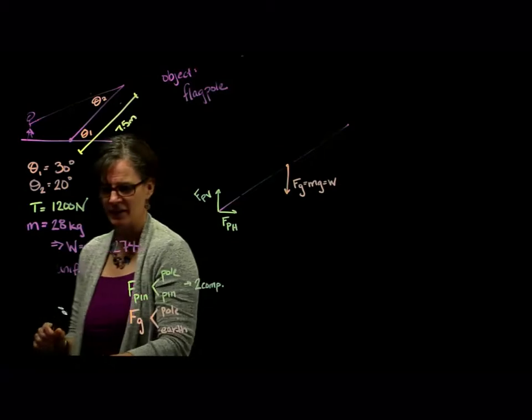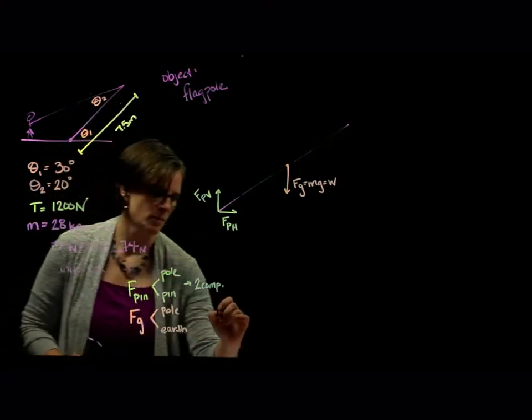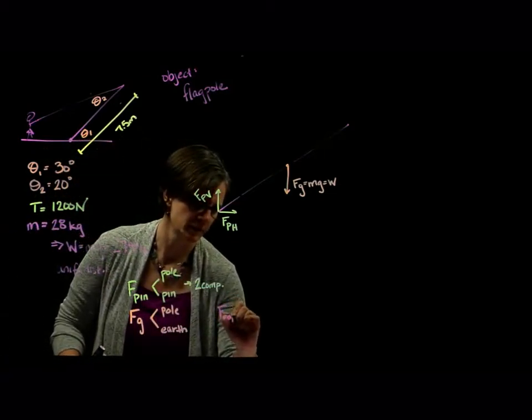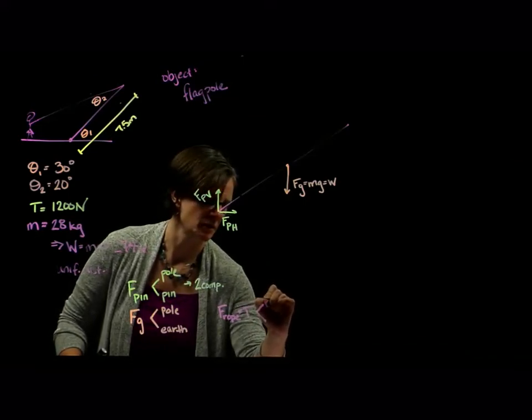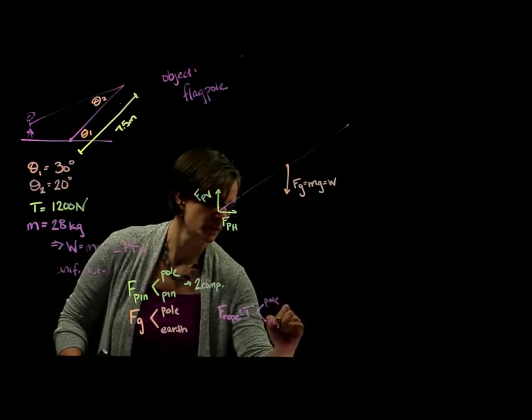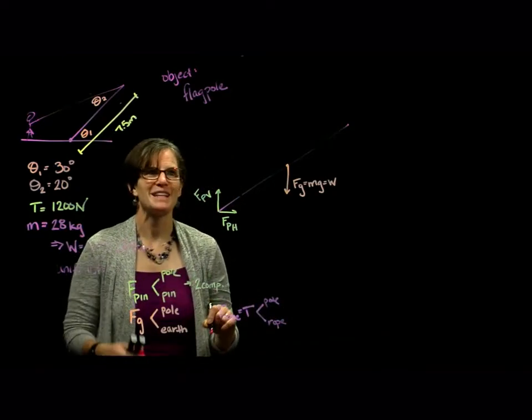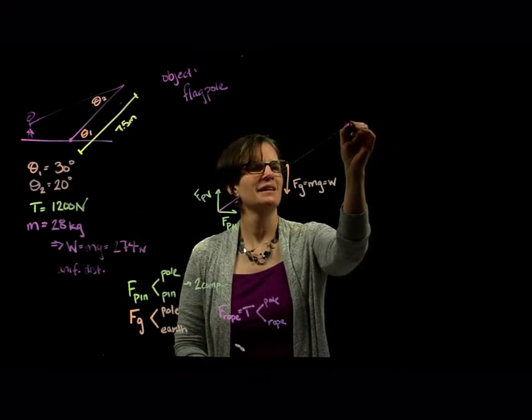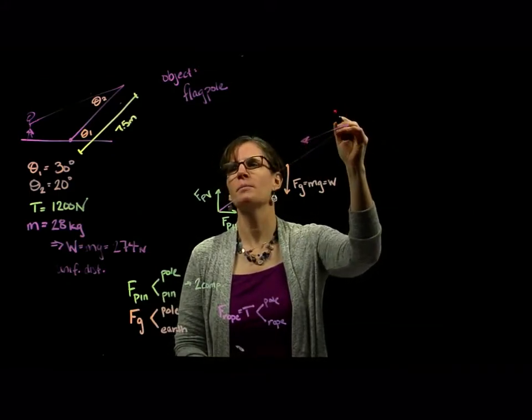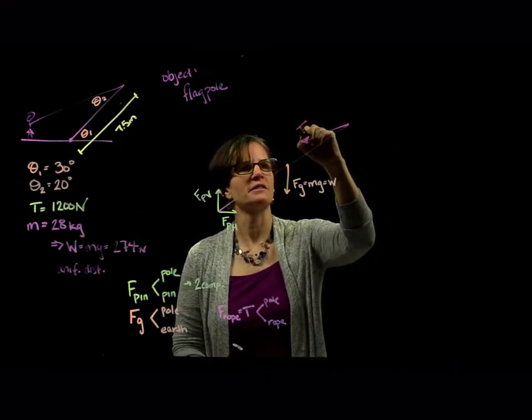Well, the rope itself. So we have the rope, the force of the rope, which we often refer to as a tension. And that's between the pole and the rope. That force acts at the end of the pole, as indicated. It acts along the direction of the rope. So there is our tension force.